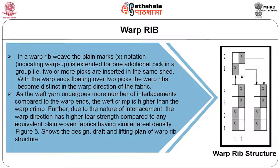In a warp rib weave, the plain notation is extended for one additional pick in a group — that is, two or more picks are inserted in the same shed. The warp ends floating over two picks make the warp rib distinct in the warp direction of the fabric. As the weft yarn undergoes more interlacements compared to the warp ends, the weft crimp is higher than the warp crimp. Due to the nature of interlacement, the warp direction has higher tear strength compared to any equivalent plain cloth having a similar aerial density. Figure 5 shows the drafting design and lifting plan of the warp rib.